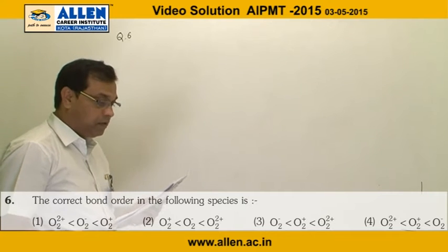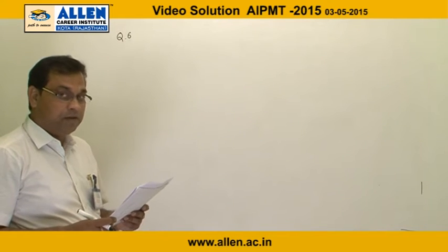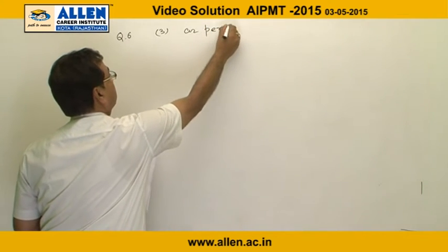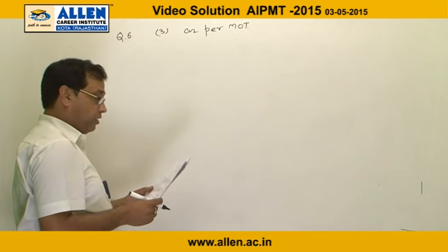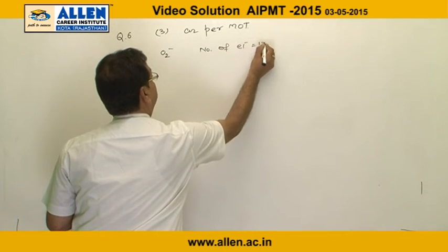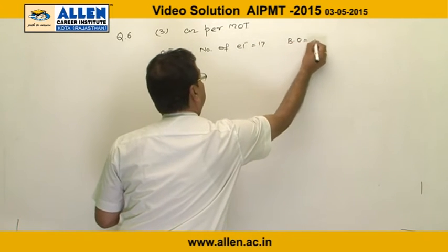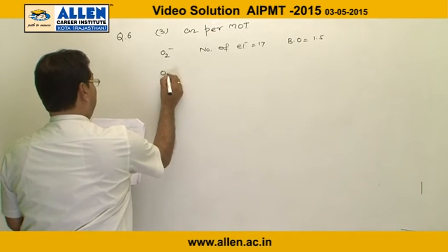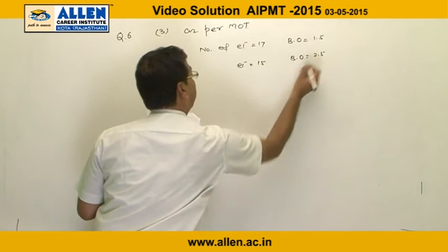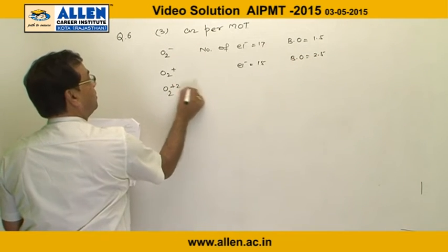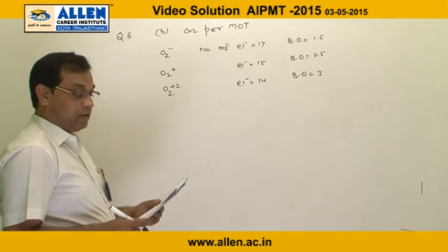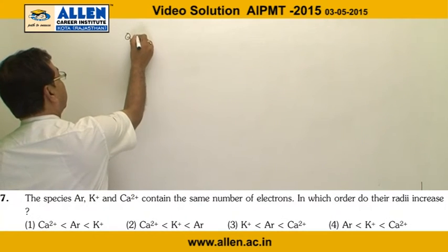Question number 6: the correct bond order in the following species. The answer is option 3. As per MOT (molecular orbital theory): O2⁻ has 17 electrons and bond order 1.5; O2⁺ has 15 electrons and bond order 2.5; O2²⁺ has 14 electrons and bond order 3. So the correct answer is option number 3.